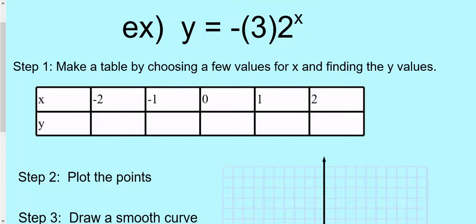This one has a negative sign in front of it. So I'm going to start with 0. 2 to the 0 is 1 times 3 is 3, and then it's negative. And then 2 to the 1st is 2 times 3 is 6, but then it's negative. 2 squared is 4 times 3 is negative 12.